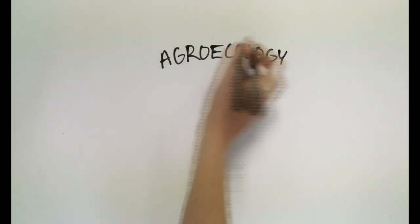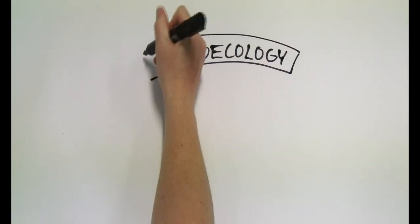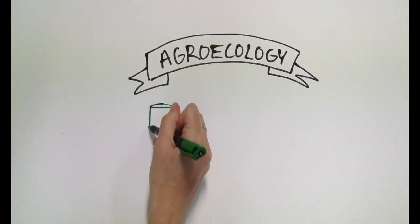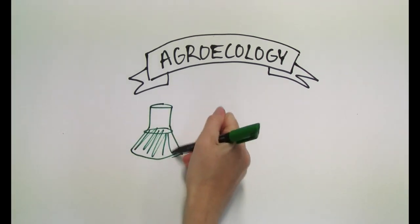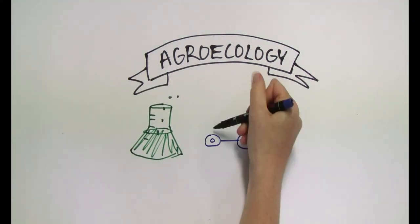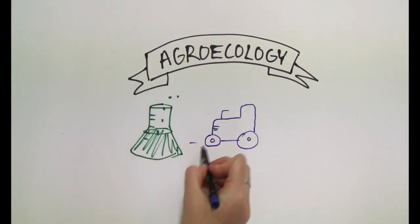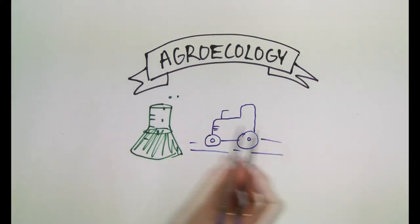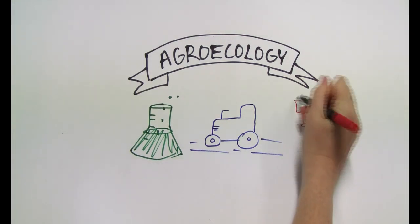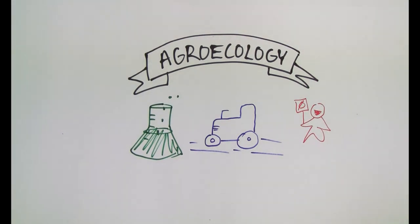What is agroecology? Agroecology is not easy to describe because of its multifaceted nature that includes the dimensions of science, practice and social movements. To keep a broad perspective, let's start with the term itself.